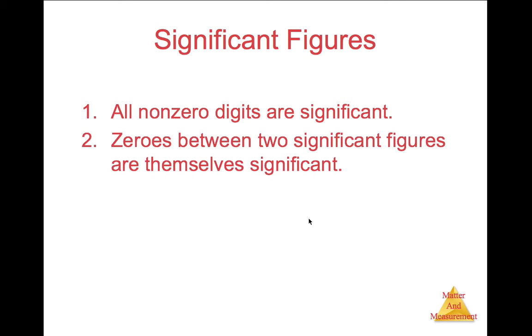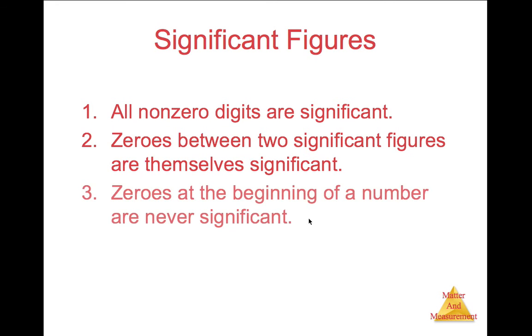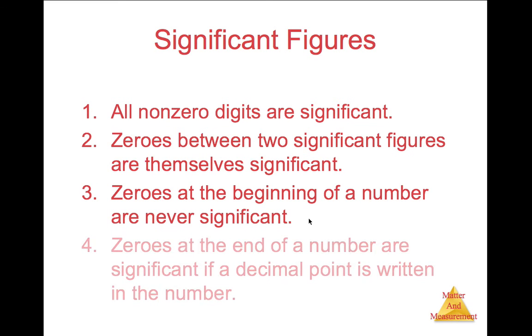And thirdly, zeros at the beginning of a number are never significant. And finally, zeros at the end of the number are significant if a decimal point is written in the number.